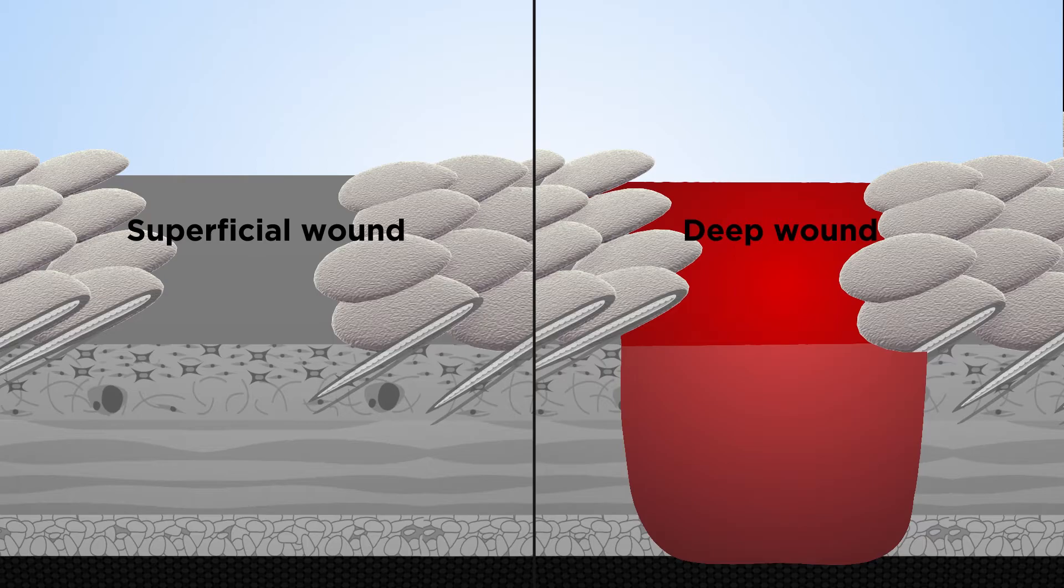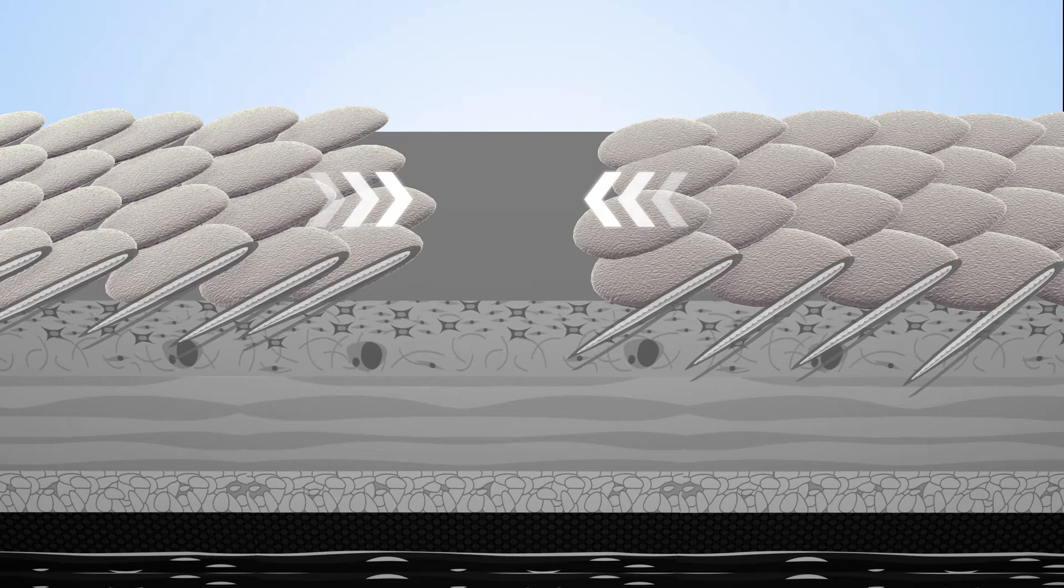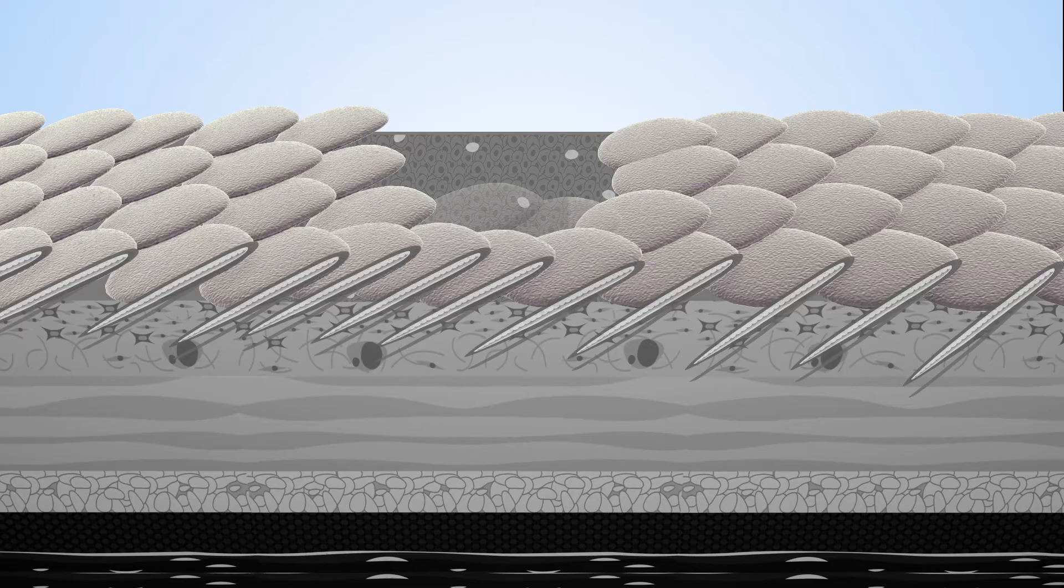Two healing processes are dependent on the type of wound the fish experiences. Superficial wounds heal rapidly. The keratocytes in the epidermis move across from both sides of the wound and scales regenerate.